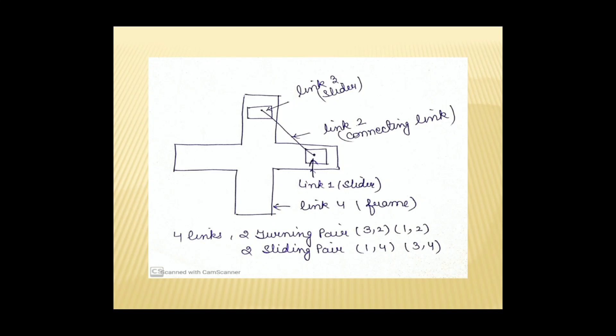The turning pair of link 1 and link 2 is also a turning pair. The sliding pairs are formed between the two sliders and the frame: the sliding pair forms between link 4 and link 1, and between link 4 and link 3.